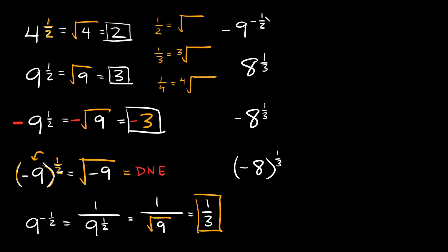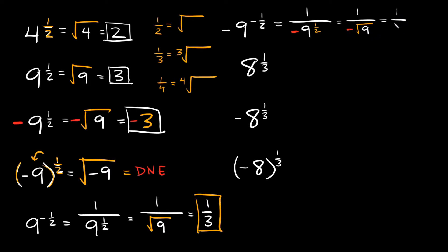Now we have negative 9 raised to the negative one-half power. We apply the same negative exponent rule: this equals 1 over negative 9 to the positive one-half power. Since there are no parentheses, the exponent only applies to the 9 — the negative sign stays outside. So 9^(1/2) is the square root of 9, which is 3, giving us negative 3 in the denominator. That means the answer is 1 over negative 3, which we can also write as negative one-third.